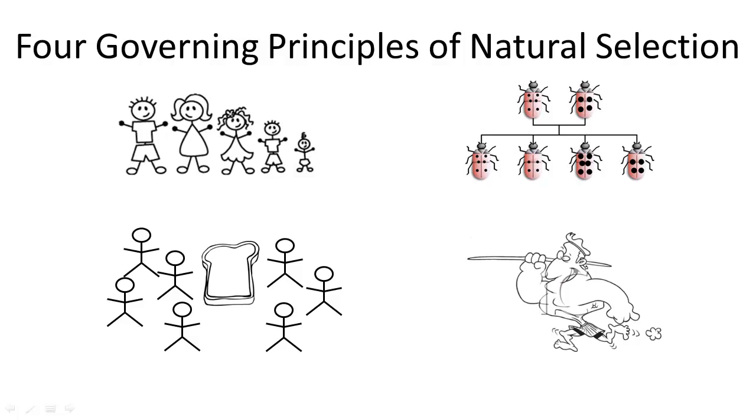So what are the four governing principles of natural selection? Natural selection was Darwin's theory of evolution. And they, obviously, have four principles. Let's go into depth about what each of these principles mean so we can get a better understanding of what Darwin was thinking.